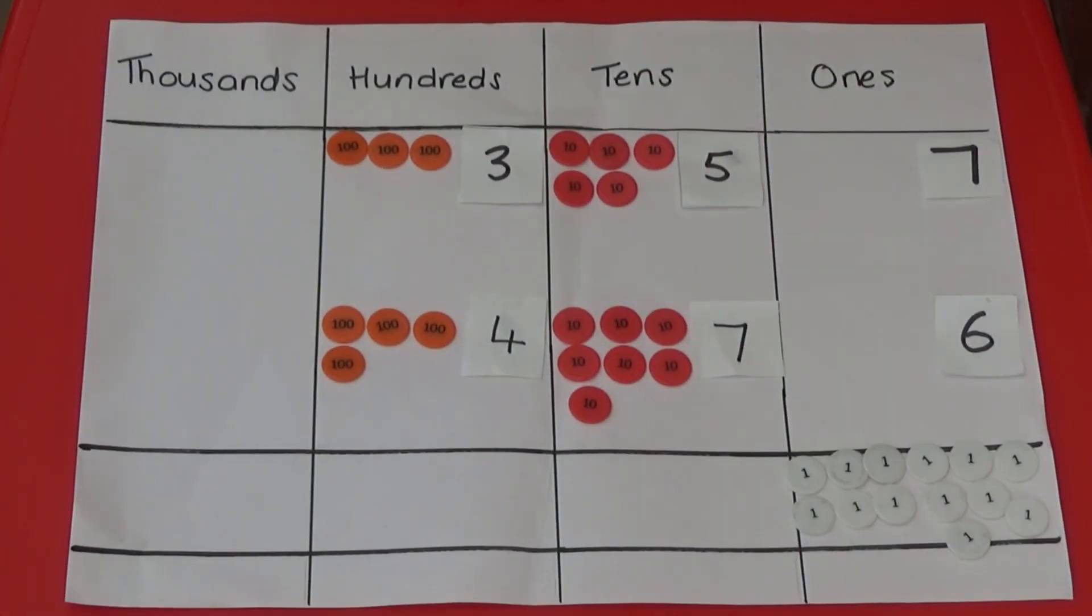7 add 6 equals 13 1s. We can't have 13 1s in the 1s column. So I'm going to exchange 10 of my 1s for a 10s counter and place it in the 10s column under the answer box.